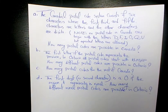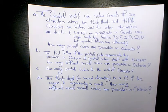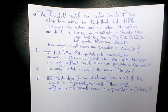In this video I want to show you how to solve this interesting question which contains four parts. The first part is saying that Canada's postal code system consists of six characters where the first, third, and fifth characters are letters and the other characters are digits.